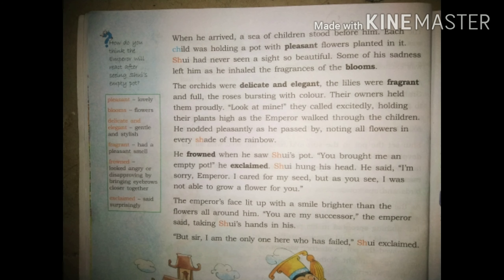'You are my successor,' the Emperor said, taking Shui's hand in his. Shui was very surprised - he had not grown anything in his plant, but still the Emperor was making him the next successor of the kingdom. Shui said: 'But sir, I am the only one here who has failed.'